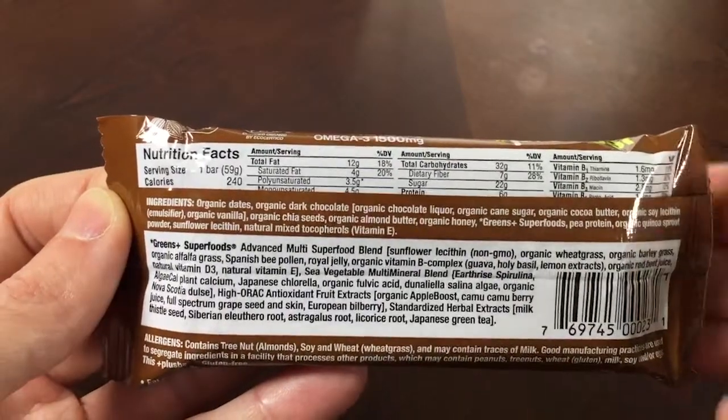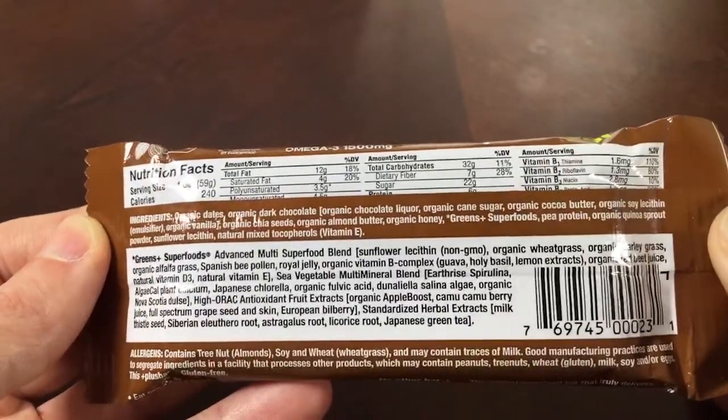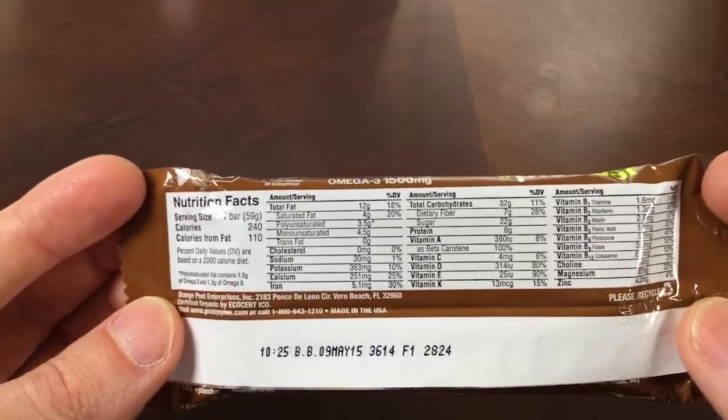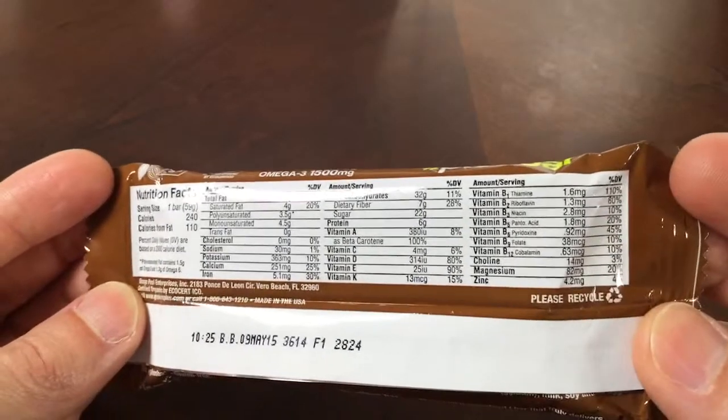So what you're going to find on the Nutrition Facts is that yes, still the ingredients are essentially unchanged, except for the second ingredient is now organic dark chocolate. And when you look at the Nutrition Facts, you're going to see that we now have more saturated fat, which is going to be from the cocoa, the cocoa butter.